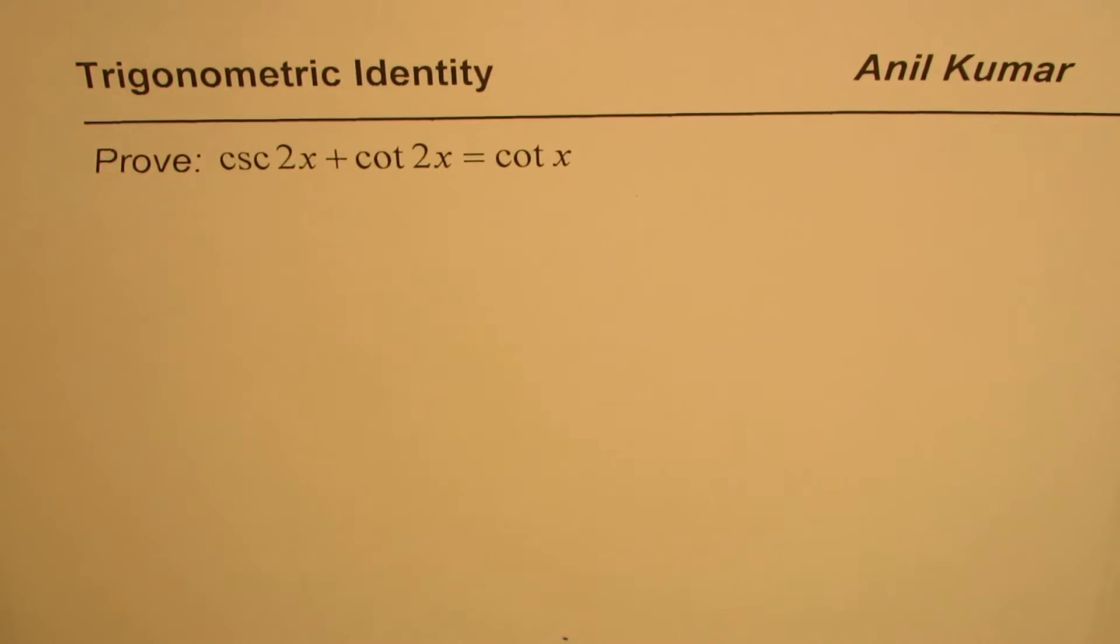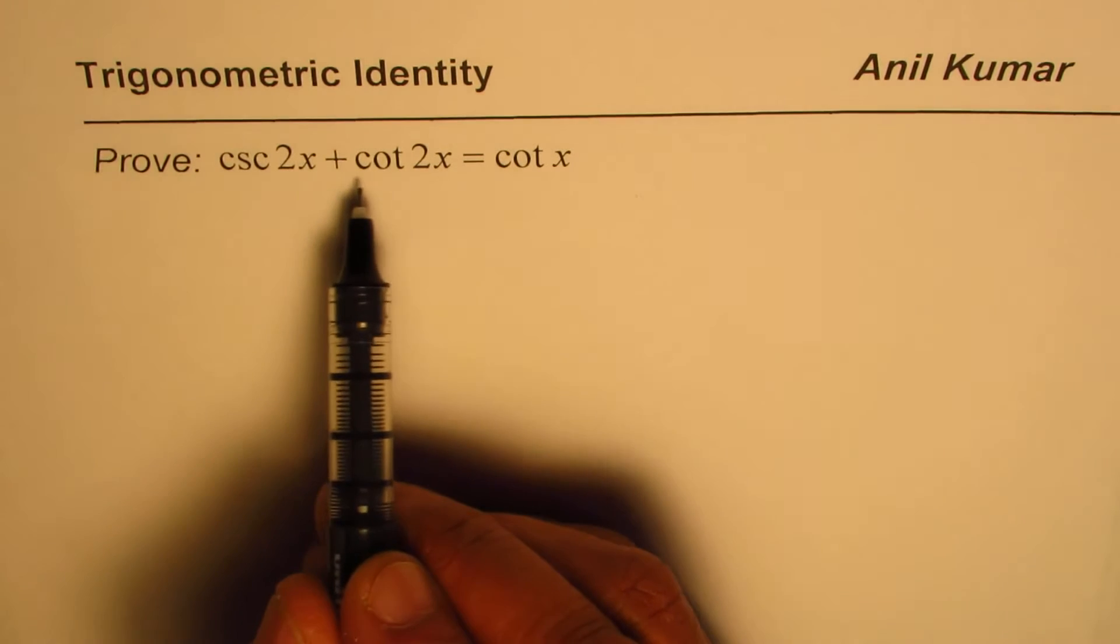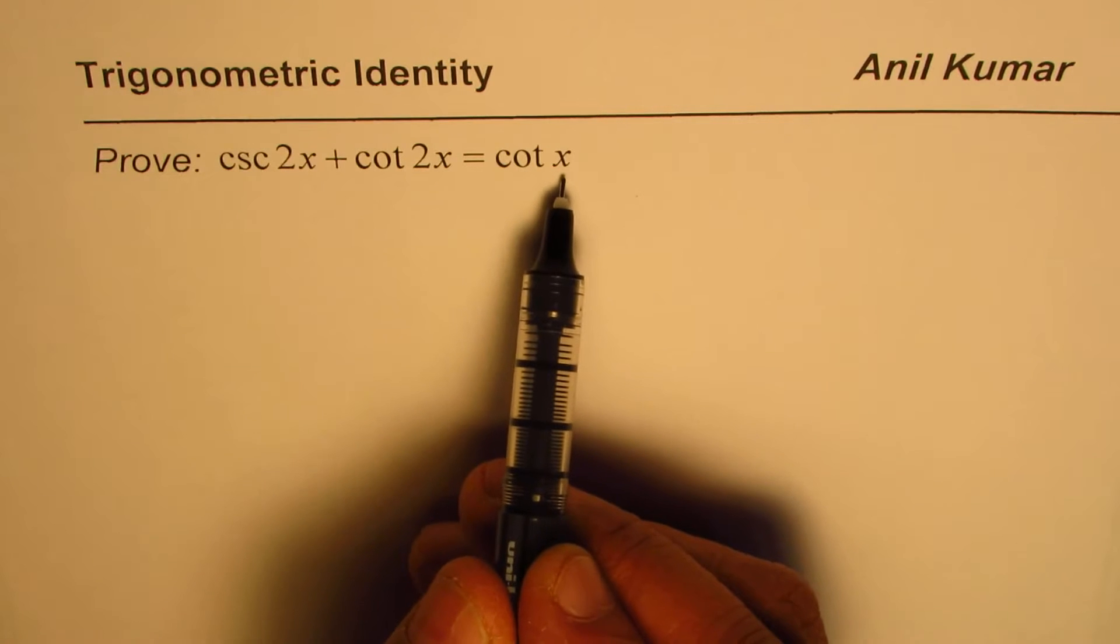I'm Anil Kumar. Here is a trigonometric identity with double angle. You need to prove cosecant 2x plus cotangent 2x equals cotangent x.